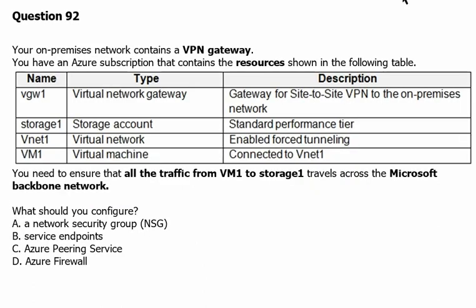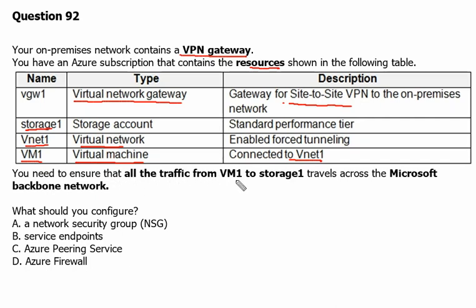Let's move to the next question — Question 92. Your on-premises network contains a VPN gateway. You have an Azure subscription that contains the resources shown in the following table: one virtual network gateway helping with site-to-site VPN connectivity, one storage account, one virtual network, and one virtual machine connected to VNet1. You need to ensure that all traffic from Virtual Machine 1 to Storage 1 travels across the Microsoft backbone network. What should you configure?